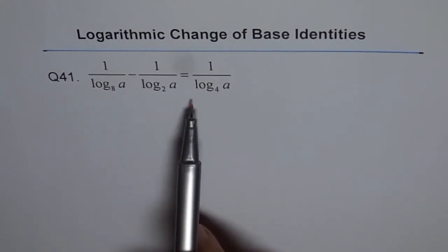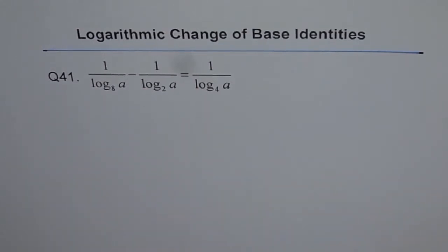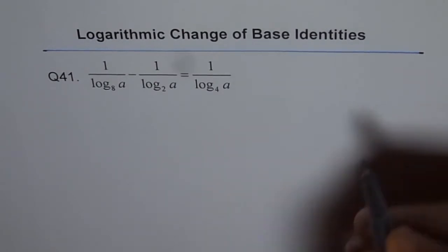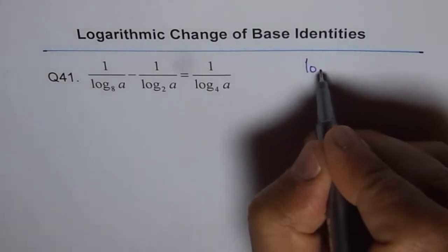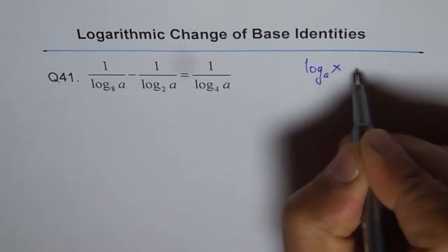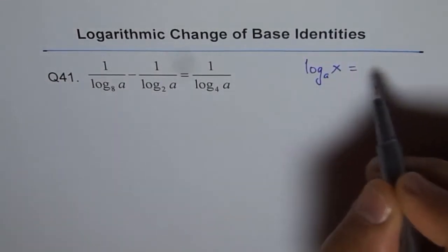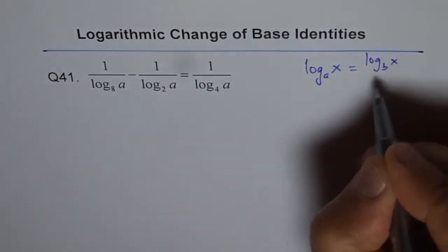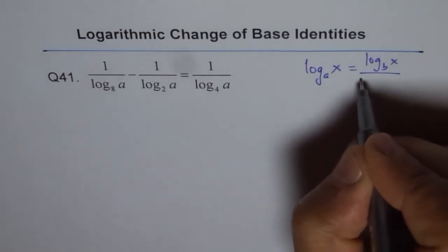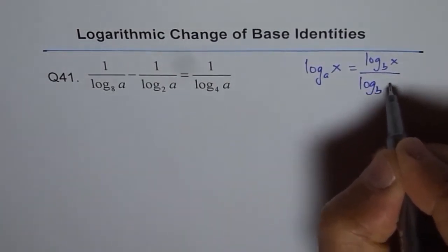This equals 1 over log base 4 of a. Now here is a quick reminder for the change of base formula. Let's say we have log base a of x. Then if we want to change the base from a to b, it becomes log base b of x divided by log base b of a.